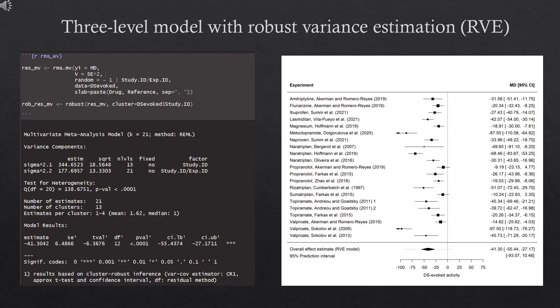We calculated mean differences as an effect size measure, and to fit the three-level model we used the RMA-MV function from the metaphor package. The pre-calculated effect sizes are specified by the EE argument, the corresponding sampling variances via the V argument, and the desired random effect structure via the random argument. Here we have a mixed effects model: one random effect corresponds to a study, and one corresponds to an experiment within a study.